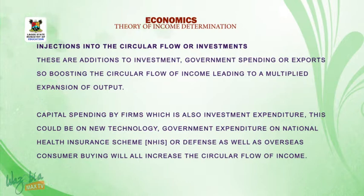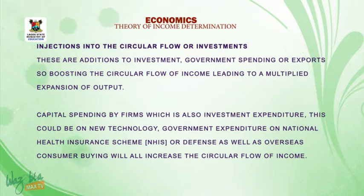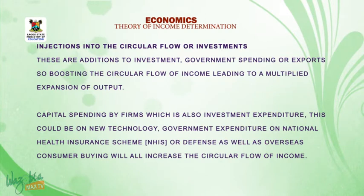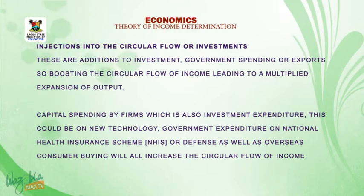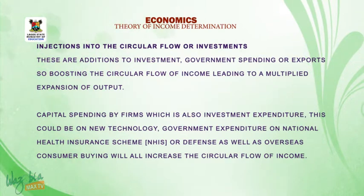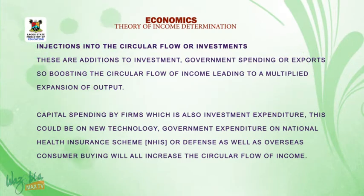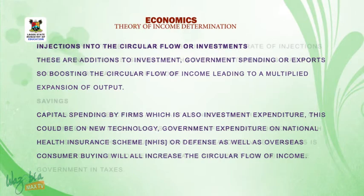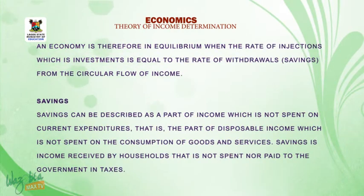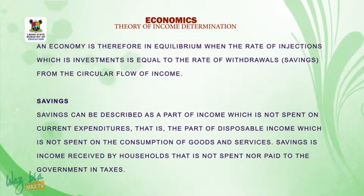Injections into the circular flow of income include additions to investment, government spending, or exports, boosting the circular flow of income and leading to a multiplied expansion of output. Capital spending by firms, which is investment expenditure, could be on new technology. The government's expenditure on national health, insurance or defense, as well as overseas consumer buying, will all increase the circular flow of income. An economy is therefore in equilibrium when the rate of injection, which is investment, is equal to the rate of withdrawal, which is savings, from the circular flow of income.